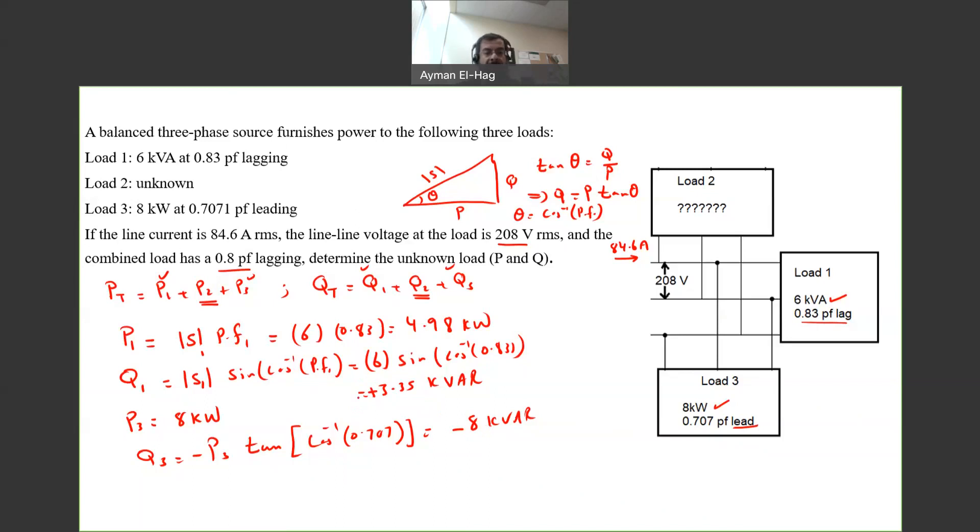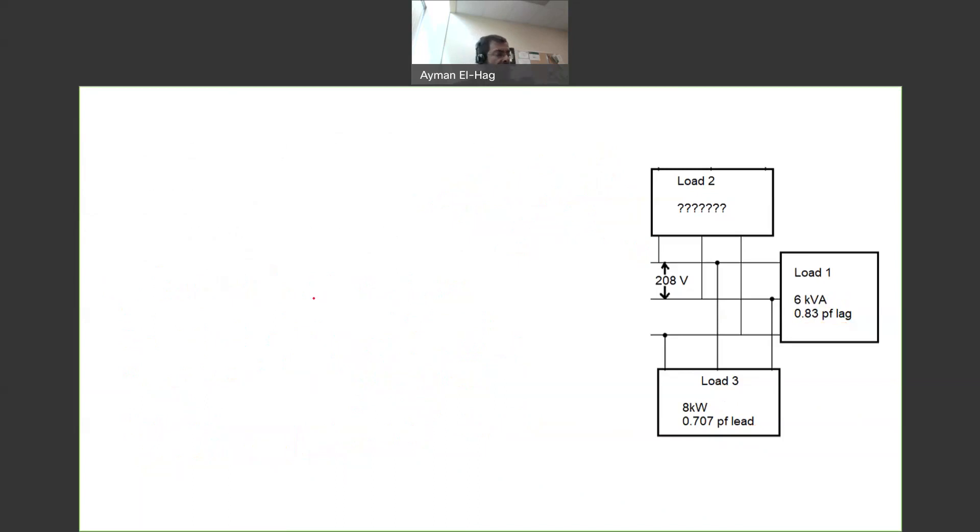We found P1 and P3, Q1 and Q3. Now we need to find P total and Q total. What do we know about S? We know that S total as a magnitude equals root 3 V line times I line, and we have all the information needed.